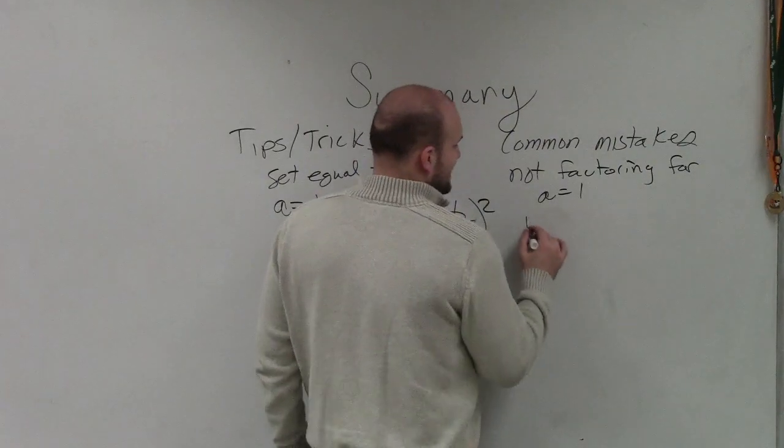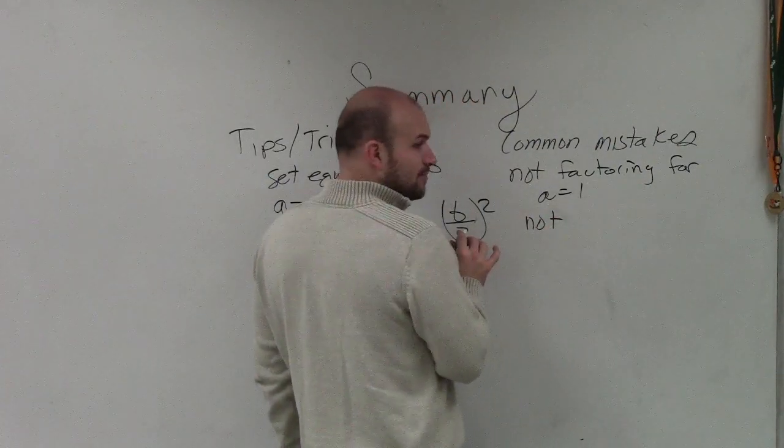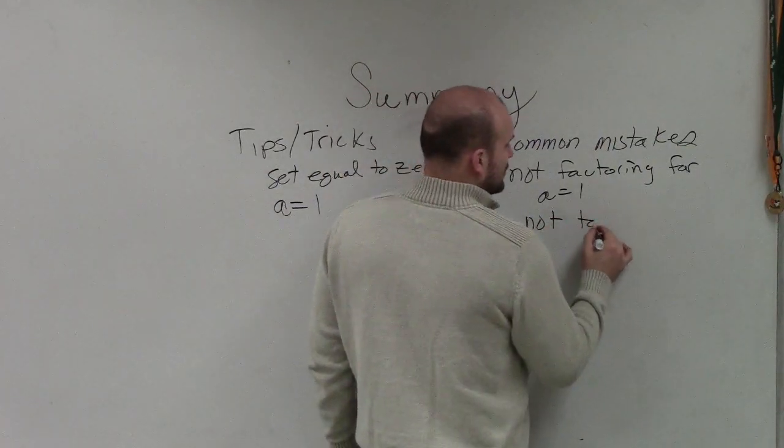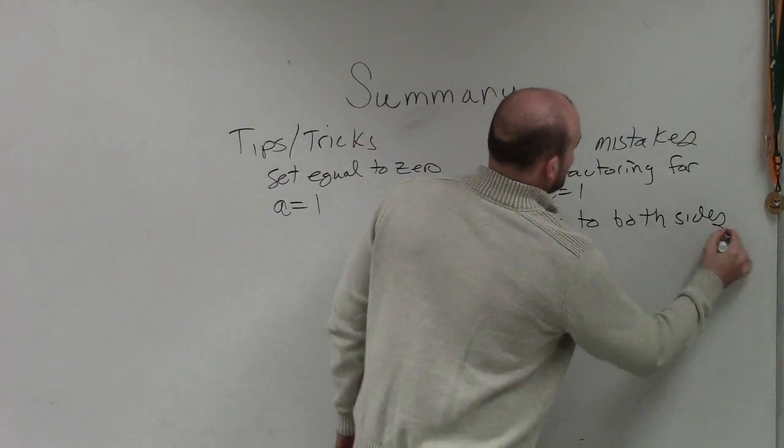The reason why we do that is we add on both sides because that creates our perfect square. So the next common mistake is not adding b divided by 2 squared to both sides.